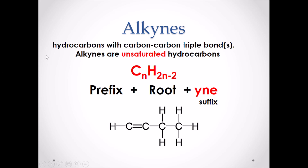Alkynes are hydrocarbons with a carbon-carbon triple bond. They are also considered unsaturated hydrocarbons because they do not have the maximum amount of single bonds between carbons. To find the number of hydrogens in an alkyne molecule, we can use the formula CnH2n-2. For example, if carbon was five, H would be two times five minus two, which would equal eight. They also follow the same structure of prefix plus root plus suffix. And since there is now a triple bond, the suffix will be Y-N-E. If we look at the molecule below, its name is butyne — four carbons in the chain, but, and then the suffix yne represents a triple bond.